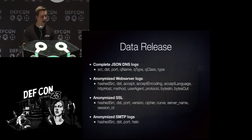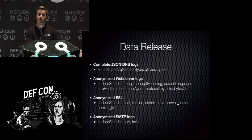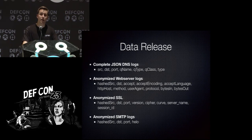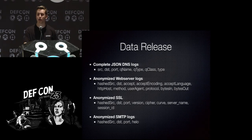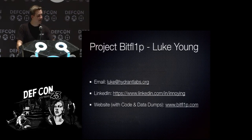On to the data release: I'm releasing complete DNS logs in JSON format — every query received, containing the source, port, queue name, queue type, and more. Also anonymized web server logs containing user agent, accepted language header, HTTP host, and method — they do not contain the URL or URL query, and contain a hashed source address so you cannot tie it back to a particular user. Similarly, anonymized SSL and SMTP logs both contain the same hashed source IP. The project website contains all these data dumps.